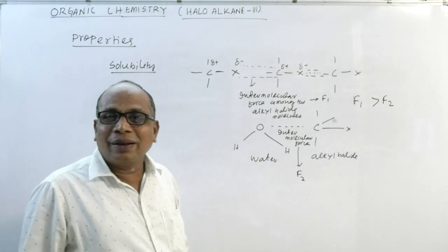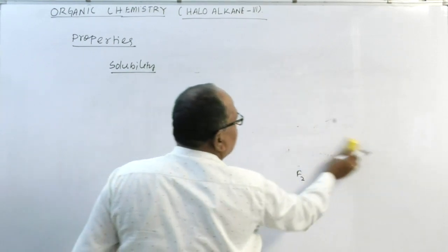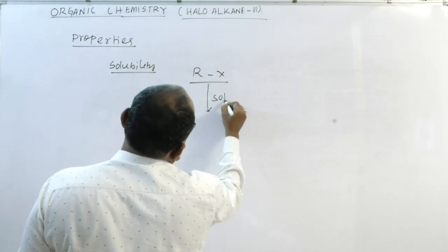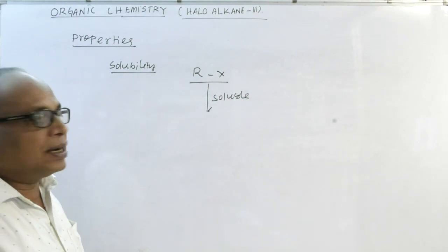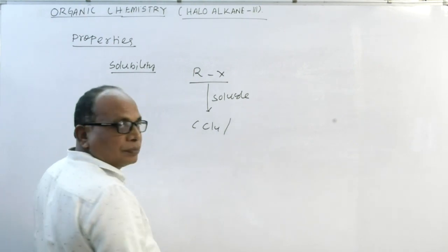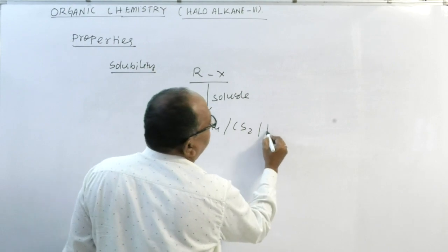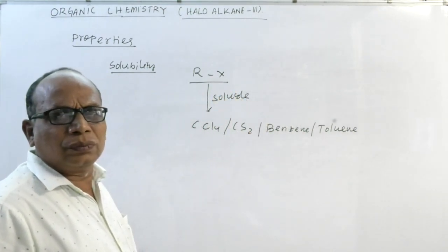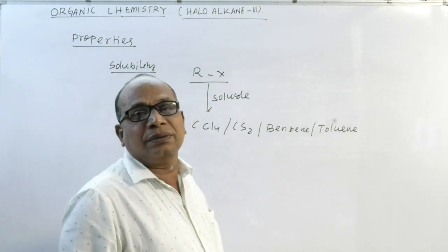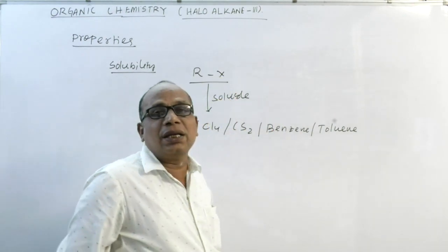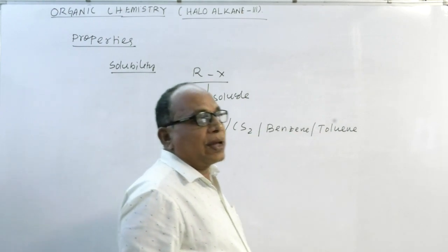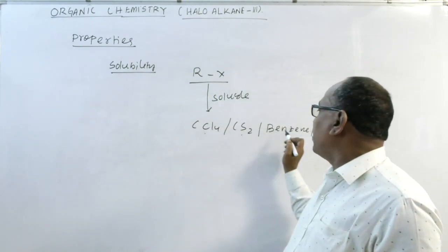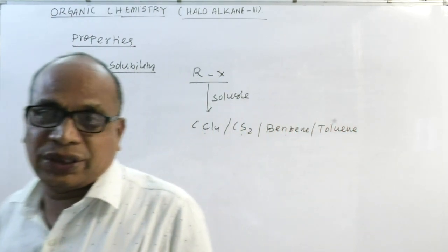Alkyl halides are soluble in non-polar organic solvents such as CCl₄, CO₂, benzene, and toluene. That is why any alkyl halide can be preserved in a non-polar solvent like carbon tetrachloride, benzene, or other non-polar solvents.